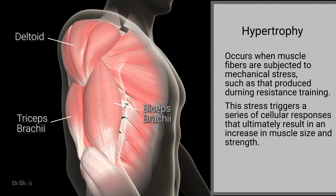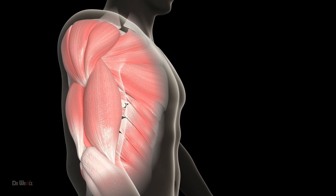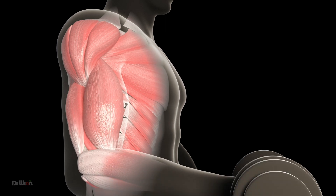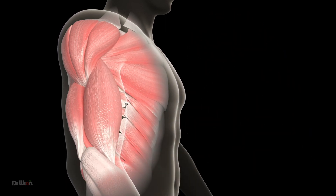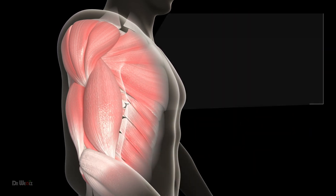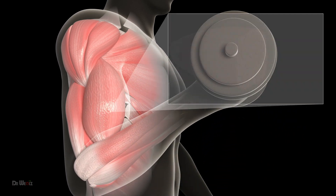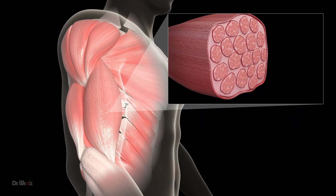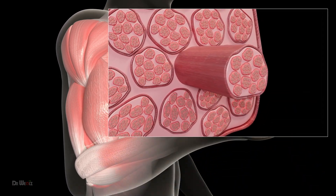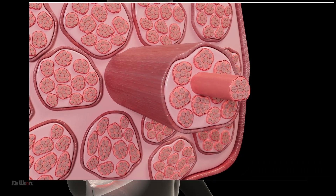This stress triggers a series of cellular responses that ultimately result in an increase in muscle size and strength. One key player in this process is the satellite cell. Satellite cells are specialized muscle stem cells that are activated in response to mechanical stress.